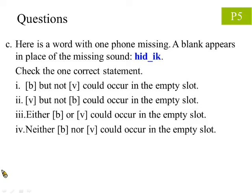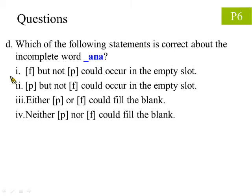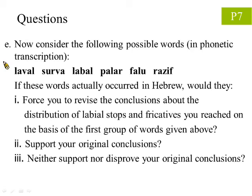Question C states that here is a word with one phone missing, which one of the following statements is correct? Question D states that here is a word with one phone missing, which one of the following statements is correct? Question E asks you to consider these six additional Hebrew words and see if they support or disprove your original conclusions.